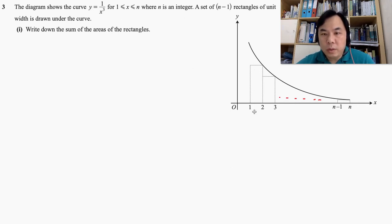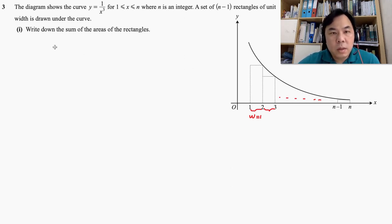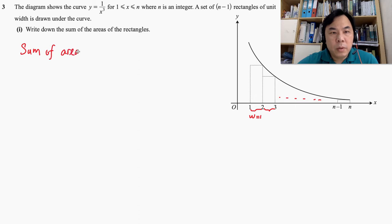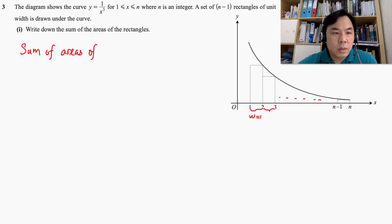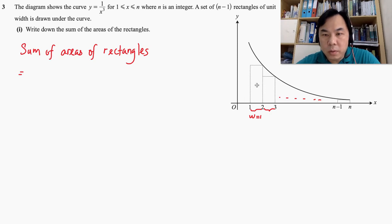First of all, the width of each rectangle is 1 unit — so it's a uniform width rectangle. Now the sum of the area of the rectangles — let's try to work this out. We can construct that area piece by piece. We're going to start from this rectangle A, for instance.